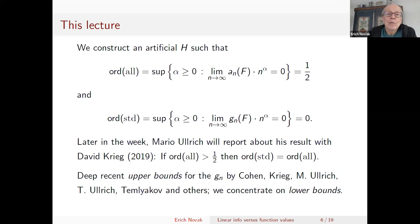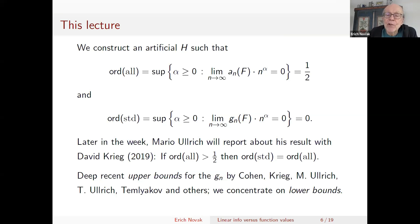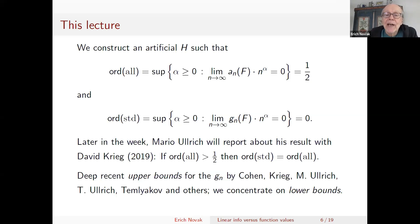If the order of convergence is larger than one half, you always get the same order of convergence for lambda_all and lambda_standard. There are a lot of very recent upper bounds — also by Albert Cohen (though usually in the randomized setting, which is a bit different) — and by David Krieg, Mario Ullrich, Tino Ullrich, Volodya Temlyakov, and others. But I concentrate on lower bounds.